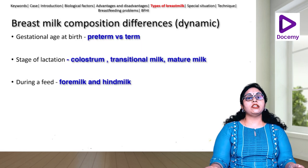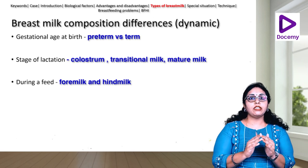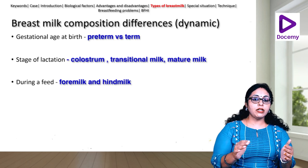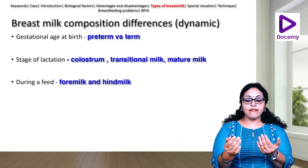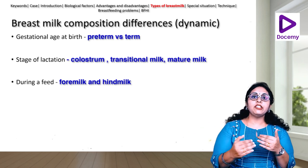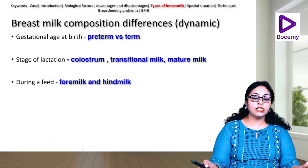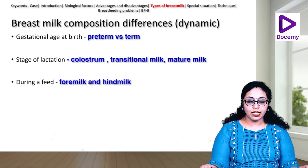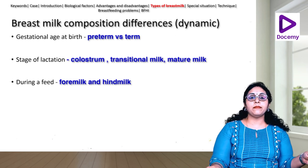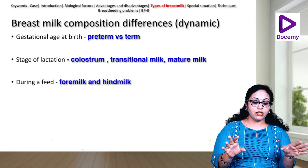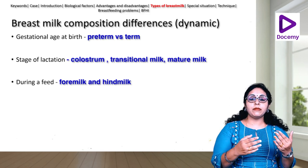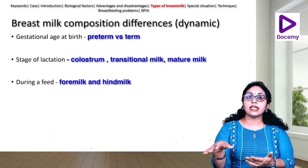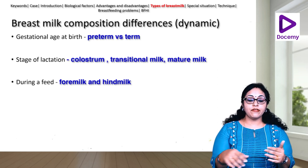Human milk is not static — it undergoes dynamic changes. The milk on day 1 differs from day 7, day 14, and day 30. These changes depend on the gestational age of the baby, stage of lactation, and even during a single feed. According to gestational age, there is preterm milk and term milk — preterm milk supports fast catch-up growth while keeping solute load low because the kidneys are immature.